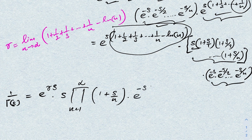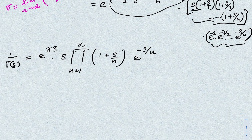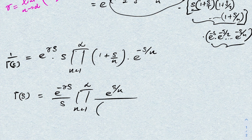Taking the reciprocal once more gives us the Weierstrass definition: Γ(s) = e^(−γs) / s · ∏(n=1 to ∞) e^(s/n) / (1 + s/n). This completes the proof of the Weierstrass definition of the gamma function. If you like this type of video, please subscribe. Thank you for watching.